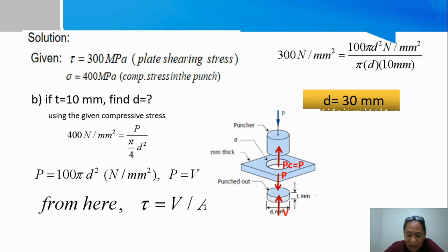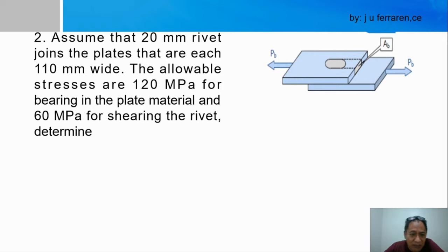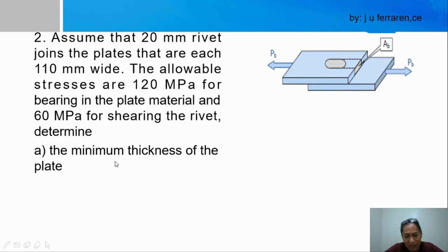Now we can proceed with number 2. The problem in number 2 involves a lap joint fastened together with a rivet. There you have a figure, you have the required. 20mm diameter rivet joins the plates that are each 110mm. This is the width. The allowable stresses are 120 megapascal for the bearing in the plate. Take note again, bearing stress is when you have two bodies in contact. There is a pressure developed at the contact point or contact surface. Then we have shearing in the rivet. You are asked to determine the minimum thickness of the plate.